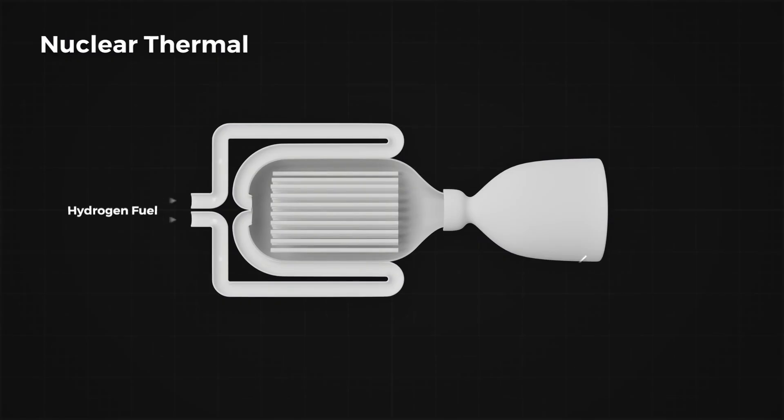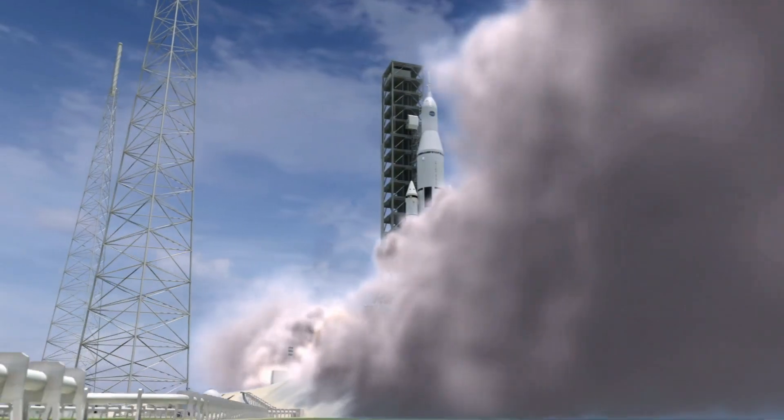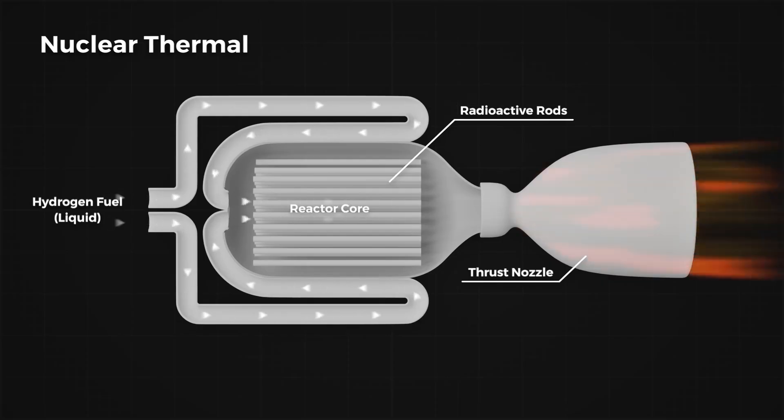But in a nuclear thermal engine, we produce heat with the help of a small nuclear reactor. After that, we pass liquid hydrogen from the storage tank to hot tubes. Due to heat, liquid hydrogen gets converted into gas. And then the nozzle increases its pressure and releases hydrogen gas. A similar process also happens in chemical rockets. So why is it more efficient than that?